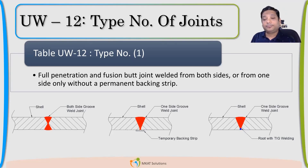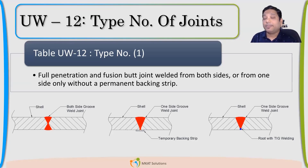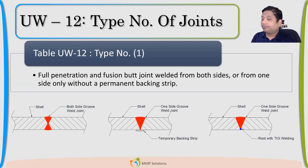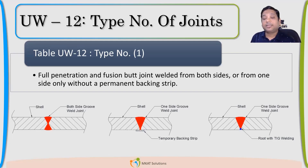This first figure is the most important joint configuration and we should have this kind of setup. If both sides are accessible, we'll have the joint type as the first figure. If I want to achieve joint efficiency 1 with full radiography, I'll select the first figure.